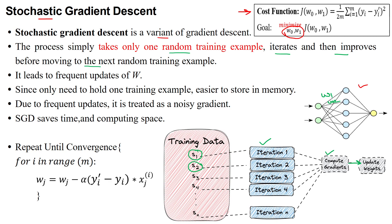The next randomly selected sample is sent to the network — that is the second iteration. In the second iteration, the gradient of the second sample is calculated and the weights are updated. Then the third sample is sent to the network, the output is calculated, and backpropagation is applied, during which the gradients are calculated and the weights are updated again.